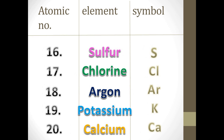The 16th element is Sulfur and its symbol is S. The 17th element is Chlorine and its symbol is Cl. The 18th element is Argon and its symbol is Ar. The 19th element is Potassium and its symbol is K. The 20th element is Calcium and its symbol is Ca.